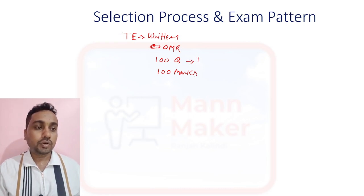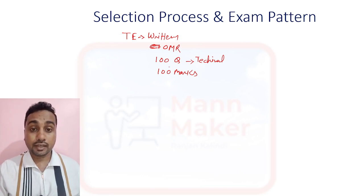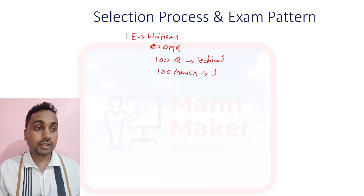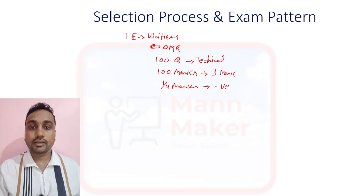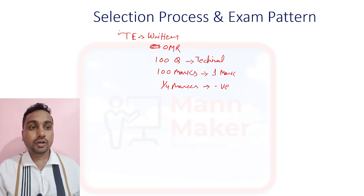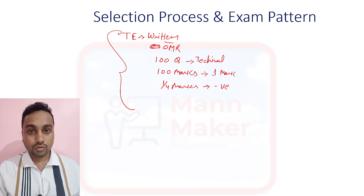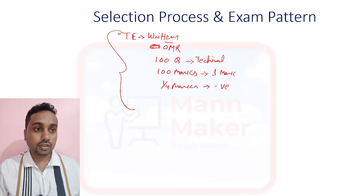The total is 100 marks — purely technical questions from your branch. For each correct answer you get one mark, and there is negative marking of one-fourth mark for each wrong answer. The selection process for Trainee Engineer is written exam only; after that medical and document verification are there, and you will join as a Trainee Engineer in BLPDIC.